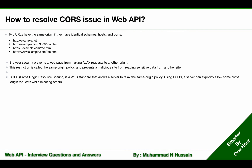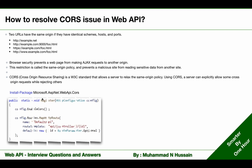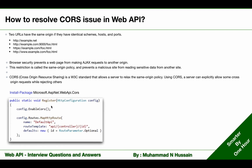Now, how can we enable CORS in Web API? We can enable this feature by following three steps. First, we need to install the Microsoft.AspNet.WebApi.Cors NuGet package. After this installation, we need to enable CORS in Web API.